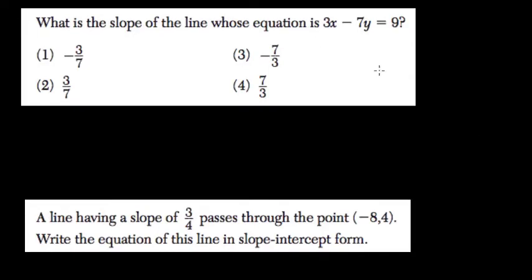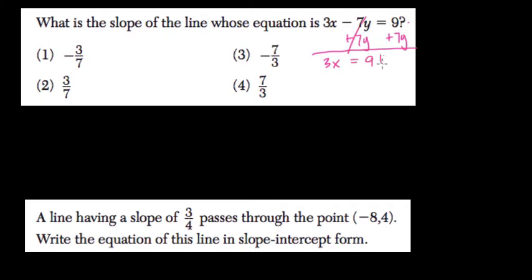What is the slope of line whose equation is the following? I want to get it so it's in y equals mx plus b form. I'll add 7y to both sides, turn it into a positive, and get y on the right-hand side. 3x — these cancel out — equals 9 plus 7y.